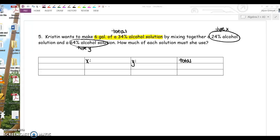X is going to be one type of our solution, and it's going to be our 24% solution. The amount of our 24% solution. Type Y is going to be the amount of our 64% solution.